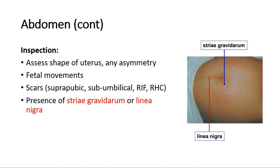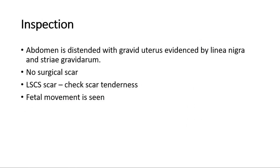Also note whether there is any presence of striae gravidarum or linea nigra. Linea nigra is the faint brown line running from the umbilicus to the symphysis pubis, shown in the picture here. We can present inspection findings by saying the abdomen is distended with a gravid uterus, evidenced by the presence of linea nigra and striae gravidarum. If there is no scar, state so; if there is a scar, such as a previous lower segment caesarean section scar, check for scar tenderness. Also state whether fetal movement is seen or absent.